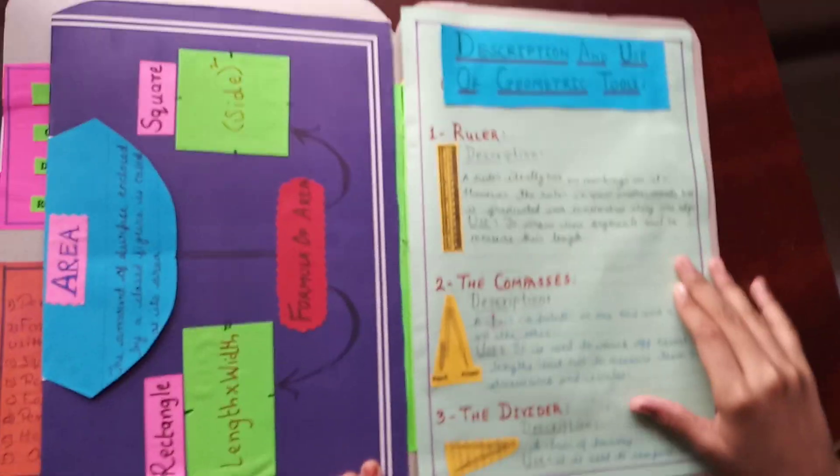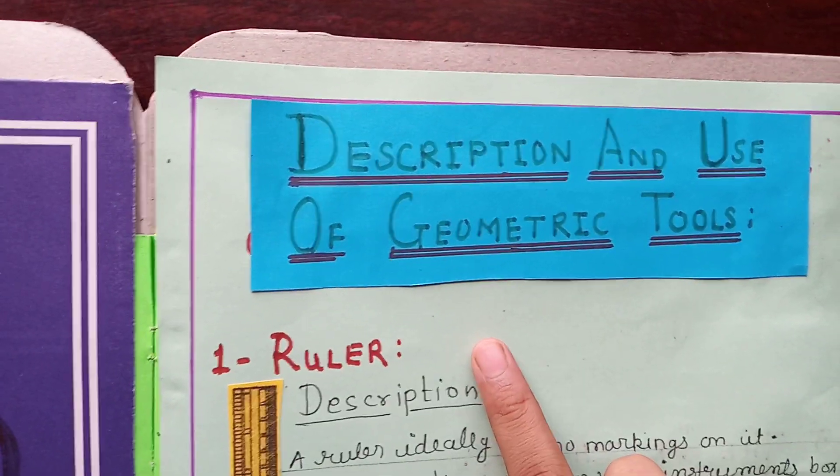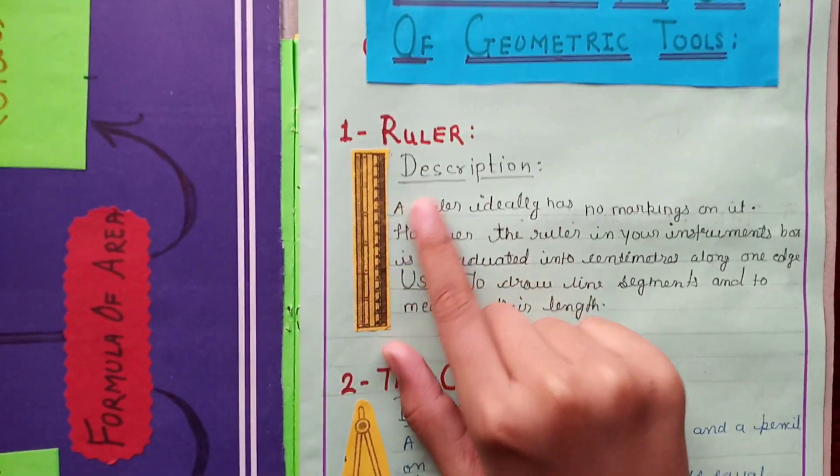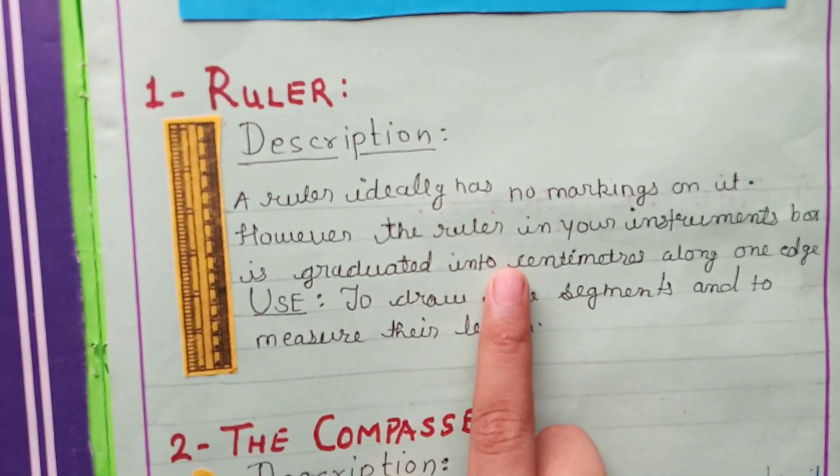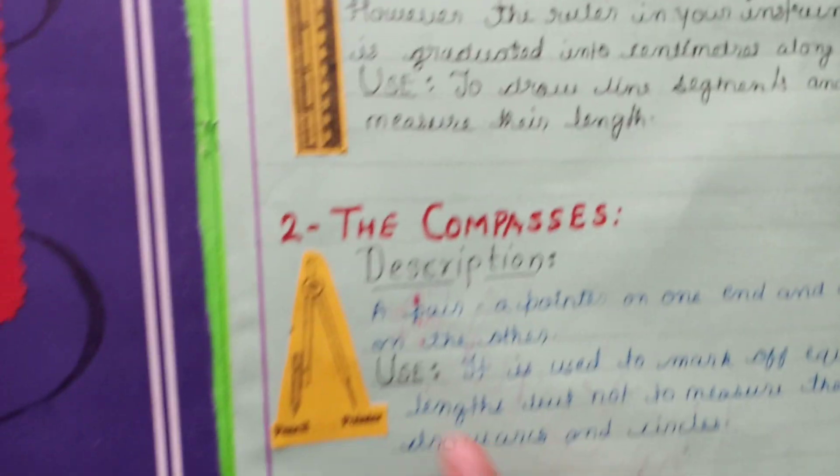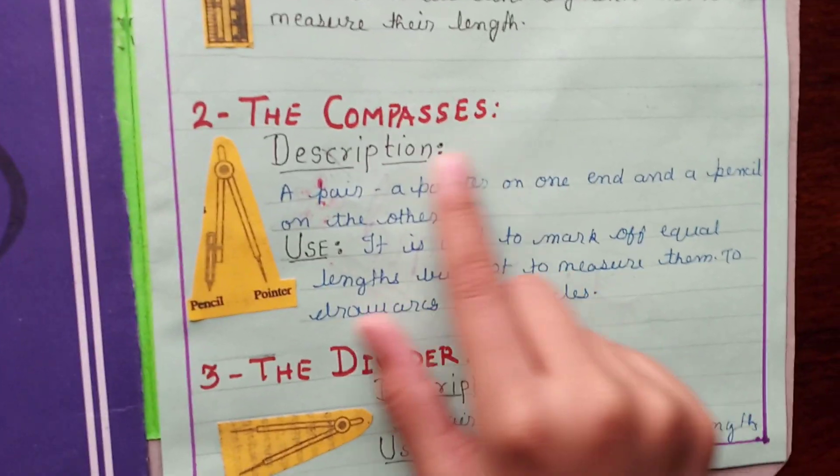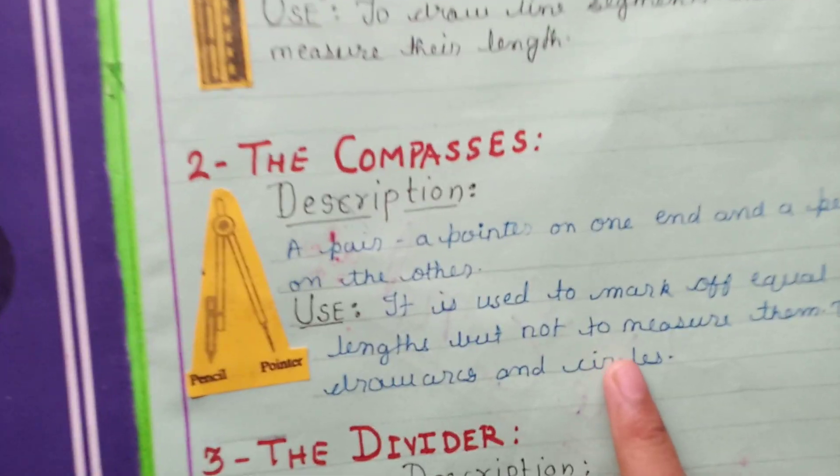The next is description and use of geometric tools. The fourth one is ruler. And here is the description of ruler. And here is the use of ruler. The next is compasses. Here is the description of compasses. And here is the use of compasses.